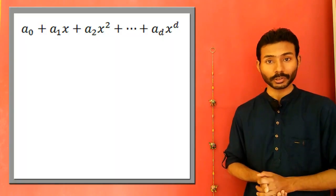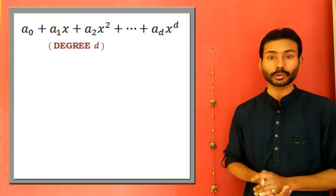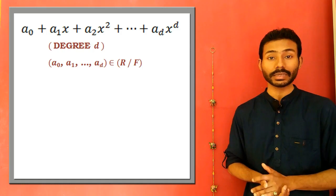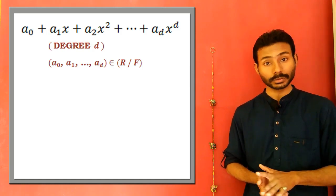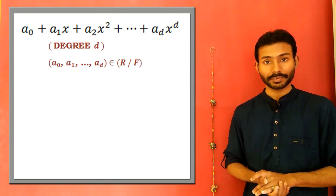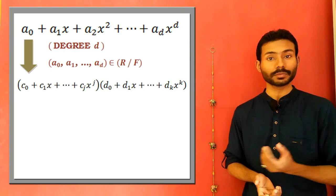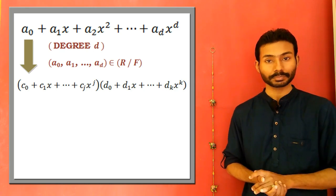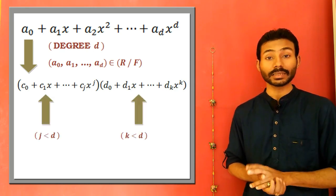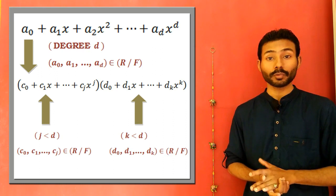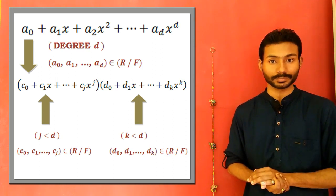A non-constant polynomial of degree d with coefficients in a ring or field is said to be reducible if it can be expressed as a product of two different factors, with each factor having degree less than d and having coefficients in the same ring or field.